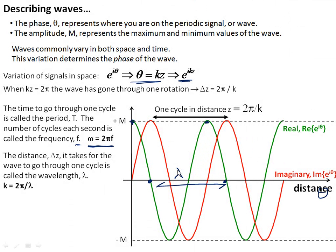And it turns out that k, which is called the wave vector, which goes into the phase, is 2 pi over the wavelength, just like we know that the frequency, omega, is equal to 2 pi over the period, T.